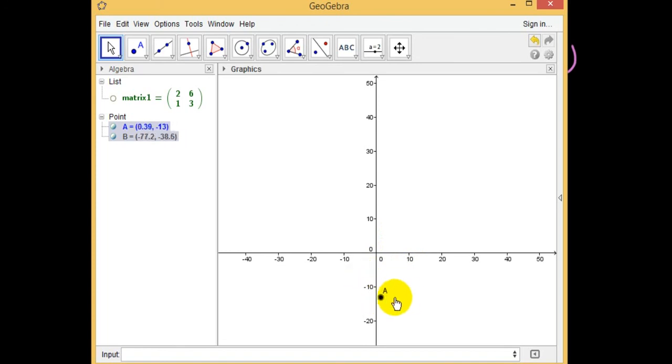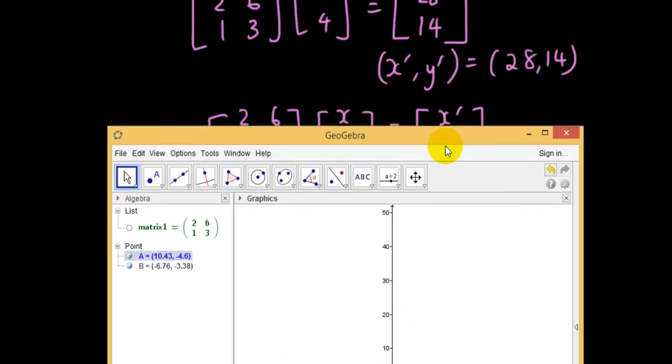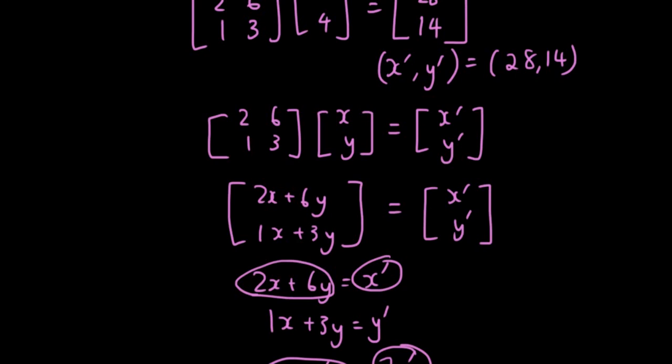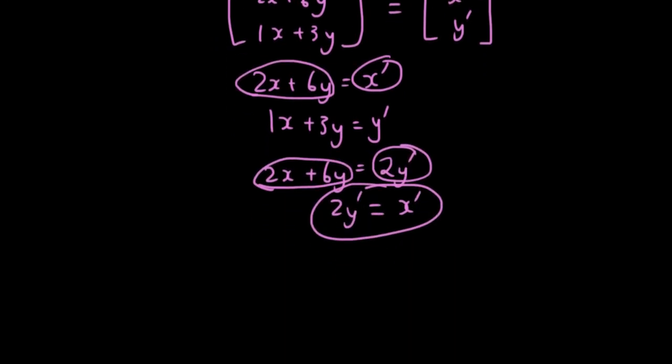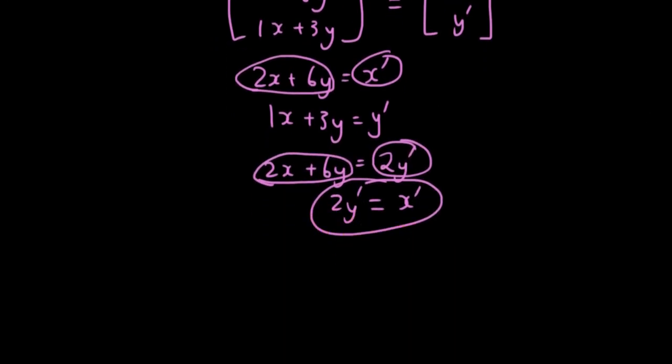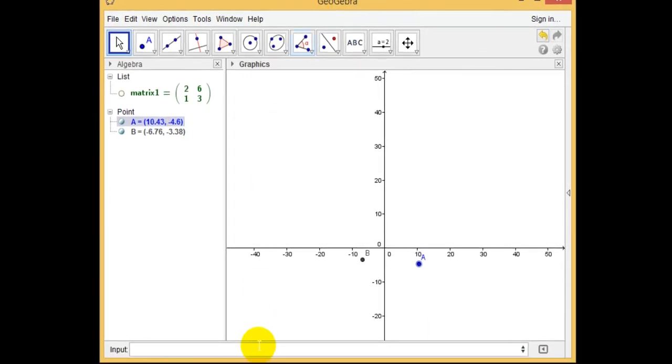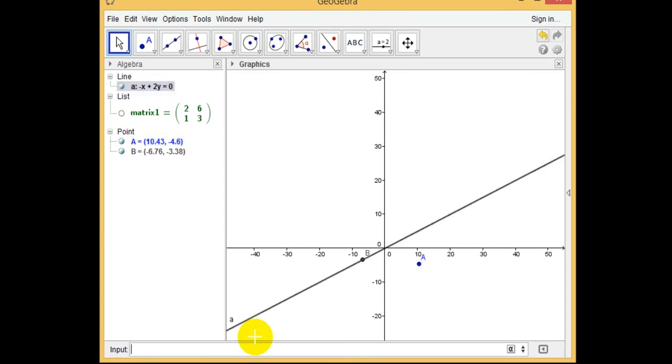And the equation of this straight line is, I have already found here, is 2y equals x. So if I draw the equation 2y equals x, you can see that point B will stay on this line regardless of where I drag point A.